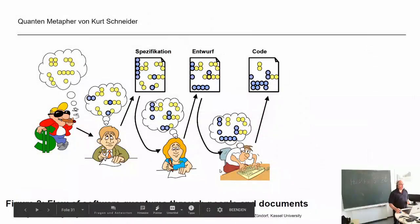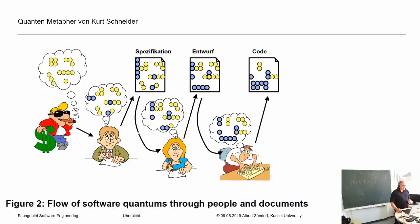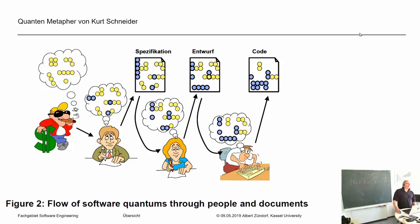Also wir haben in dem Bild hier den Requirements Engineer, der mit dem Kunden spricht. Dann kommt eine neue Person, guckt sich das Requirements-Dokument an und macht ein Design, Entwurf, Komponentenbeschreibungen, Feature-Beschreibungen, Ablauf, Szenarien. Dann kommen wieder andere Menschen, die das programmieren. Dann nochmal andere für die Qualitätssicherung. Und dann nochmal andere Menschen, die die Installation beim Kunden machen, Tutorial-Unterlagen erstellen, Benutzerschulungen machen, und Marketingleute — lauter verschiedene Menschen.